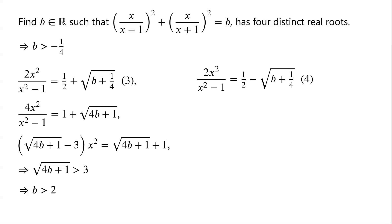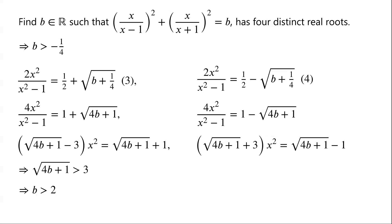Similarly, multiplying equation 4 by 2: 4x²/(x²−1) = 1 − √(4b+1). Multiplying by (x²−1) and rearranging: (√(4b+1) + 3)·x² = √(4b+1) − 1. For equation 4 to have two distinct real roots, x² must be greater than 0. Since √(4b+1) + 3 > 0, we need √(4b+1) − 1 > 0, meaning √(4b+1) > 1, which implies b > 0.